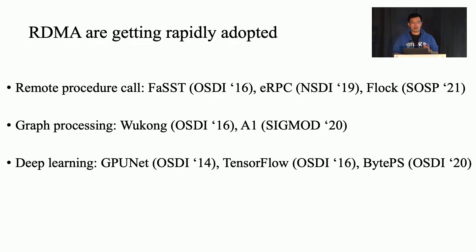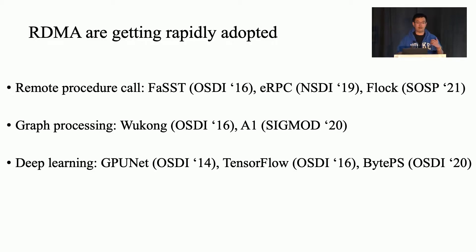Today RDMA is getting rapidly adopted. There are a lot of systems built based on RDMA transport to reduce network overhead and achieve better performance — for example, high throughput, low latency, and high CPU efficiency.